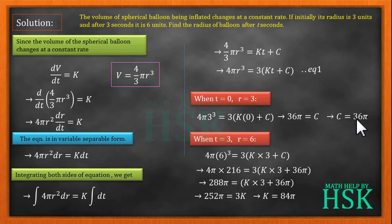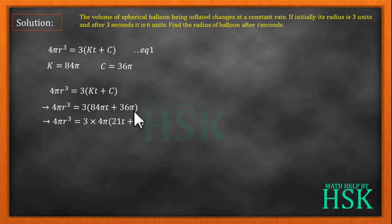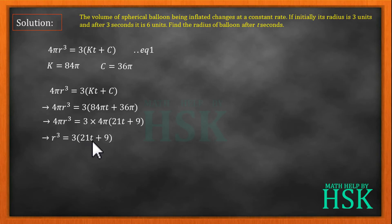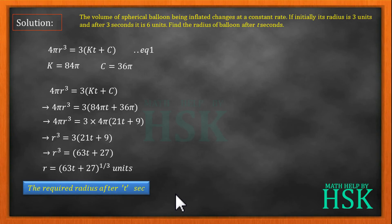Now substituting k = 84π and c = 36π into equation one to find the radius after t seconds: 4πr³ = 3(84πt + 36π). Taking 4π as common on the right side: 4πr³ = 4π(63t + 27), and 4π cancels. So r³ = 63t + 27, giving r = (63t + 27)^(1/3). This is the required radius of the balloon after t seconds.